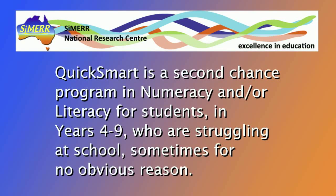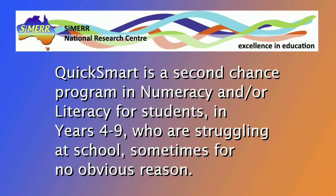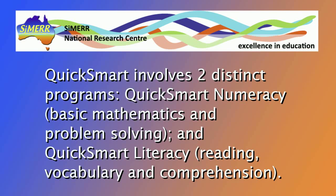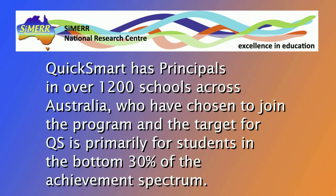Some of the other ideas I addressed in the first video included: QuickSmart is a second chance program directed at numeracy and literacy for students in years four to nine who are struggling, sometimes for no obvious reason. QuickSmart has been in operation since 2001 through the Simmer National Research Centre at the University of New England. The program involves two distinct parts — QuickSmart Numeracy, working with basic maths and problem solving, and QuickSmart Literacy, with a focus on reading, vocabulary and comprehension. QuickSmart has principals in over 1,200 schools across Australia, targeting students in the bottom 30 percent of the achievement spectrum.